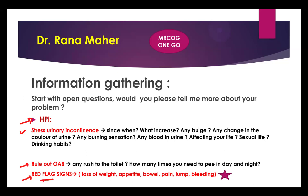Start with an open question: 'Would you please tell me more about your problem?' The patient will cover many points — since when it started, what increases it, any bulge to rule out prolapse, any change in urine color or burning sensation to rule out UTI, any blood in the urine, whether it is affecting her daily and sexual life, and what her drinking habits are.